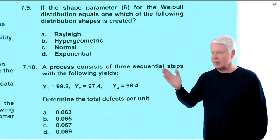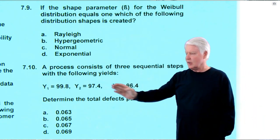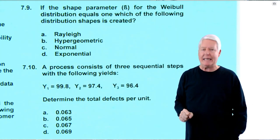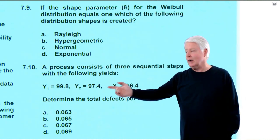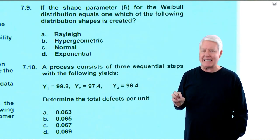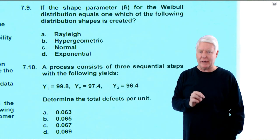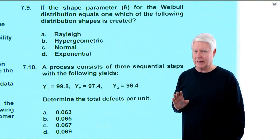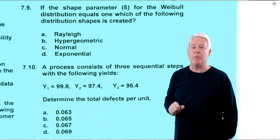Question 10: A process consists of three sequential steps with yields of 99.8%, 97.4%, and 96.4%. Determine the total defects per unit. If it were rolled throughput yield, you'd multiply them together. But defects per unit is the negative natural log of the rolled throughput yield, so first calculate RTY by multiplying all three yields together, then apply the formula. Let's go to the whiteboard.